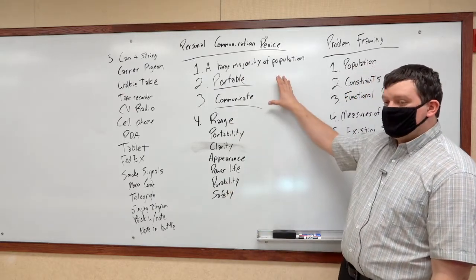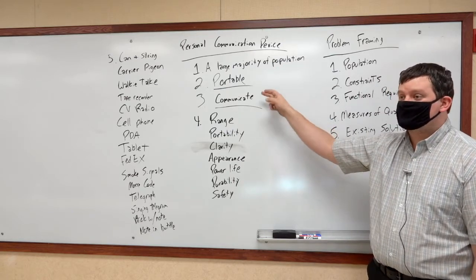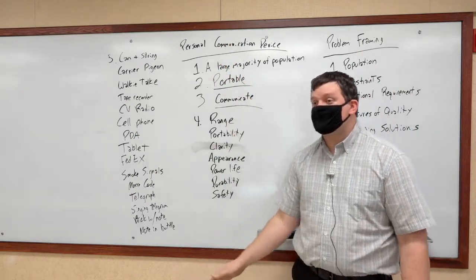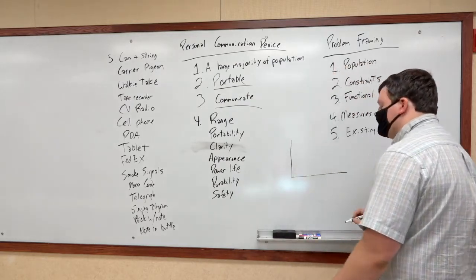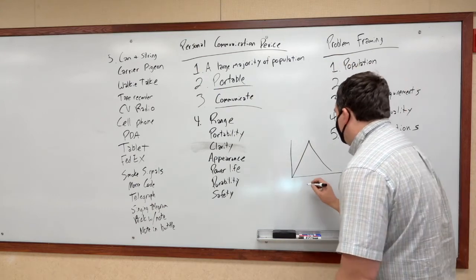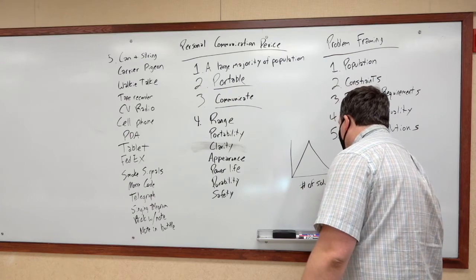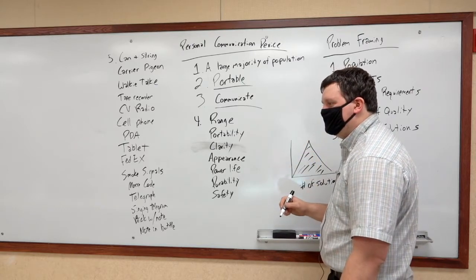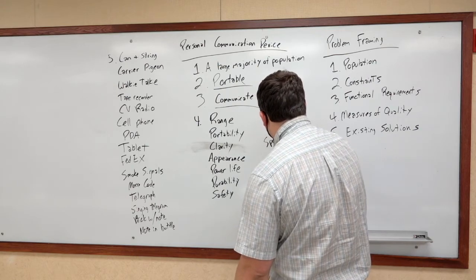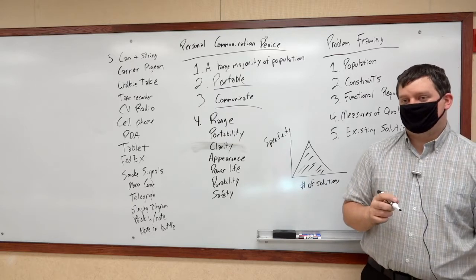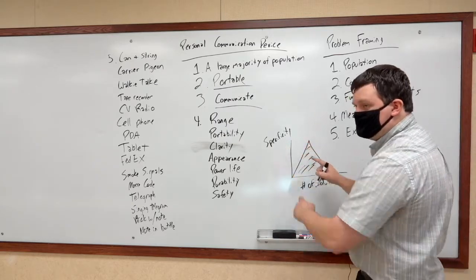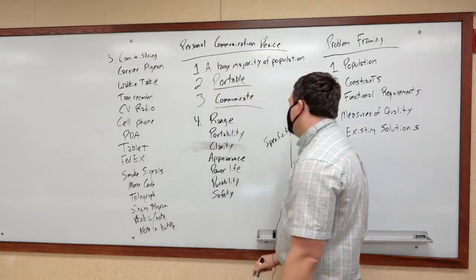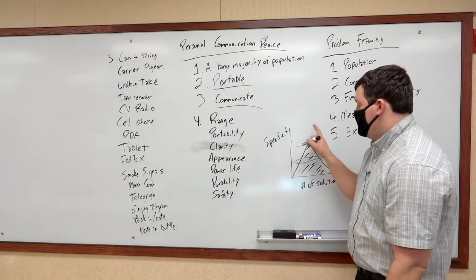This is kind of the point of the exercise. We only defined a personal communication device as something portable that allows you to communicate, and with this very vague definition we have a gigantic number of solutions. If you were to turn this into a graph — number of solutions on the bottom axis, specificity on the vertical — the more specific you are in defining your problem, the further you go up the pyramid, and the fewer solutions you're going to have. It is possible to be so specific that there are no solutions.